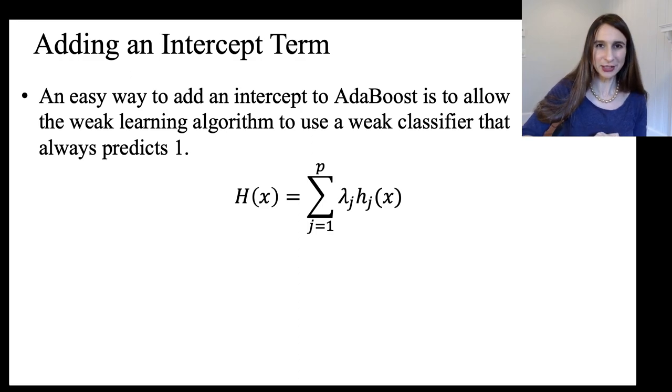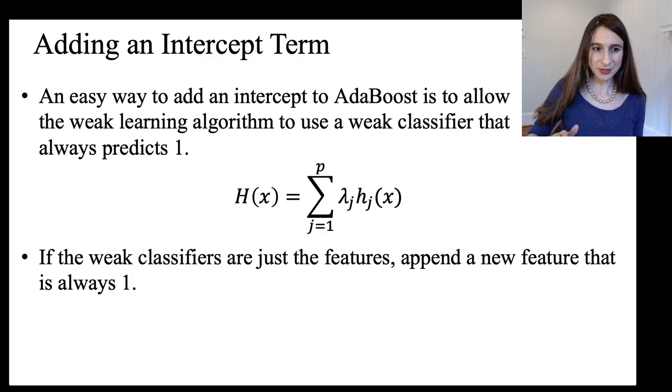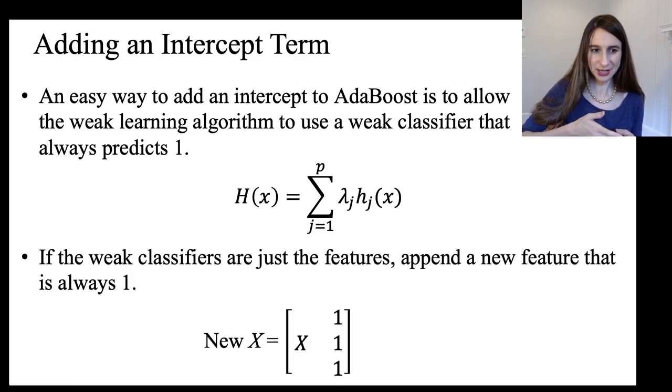Okay, so if you think about the final combined classifiers being a linear combination of the weak classifiers, as long as one of those weak classifiers is one, then the coefficient for that weak classifier is just the intercept term. And then similarly, if the weak classifiers are just the features themselves, then you can simply, before you start running AdaBoost, you can simply append a new feature that's always one. So you just take your data matrix X,